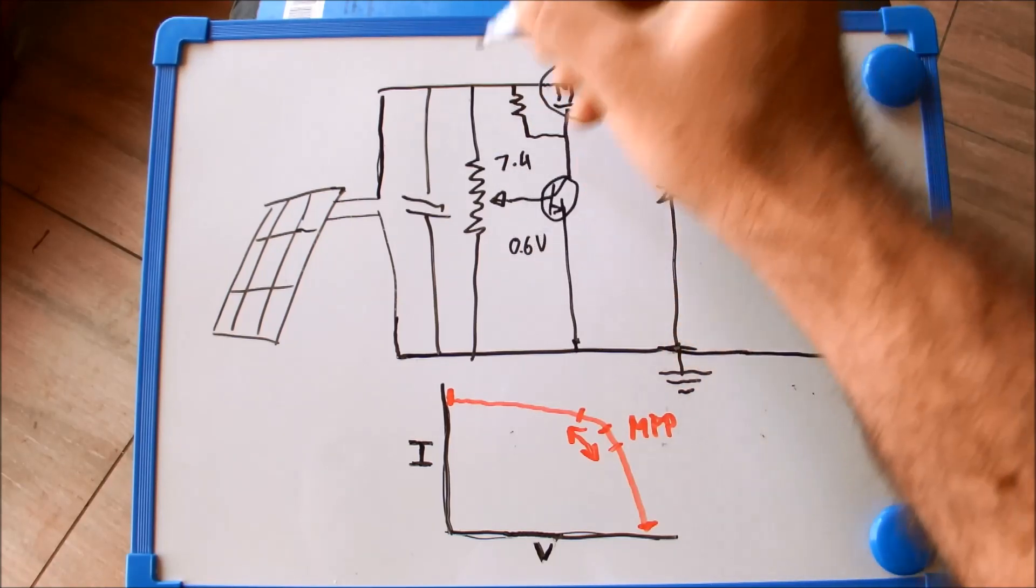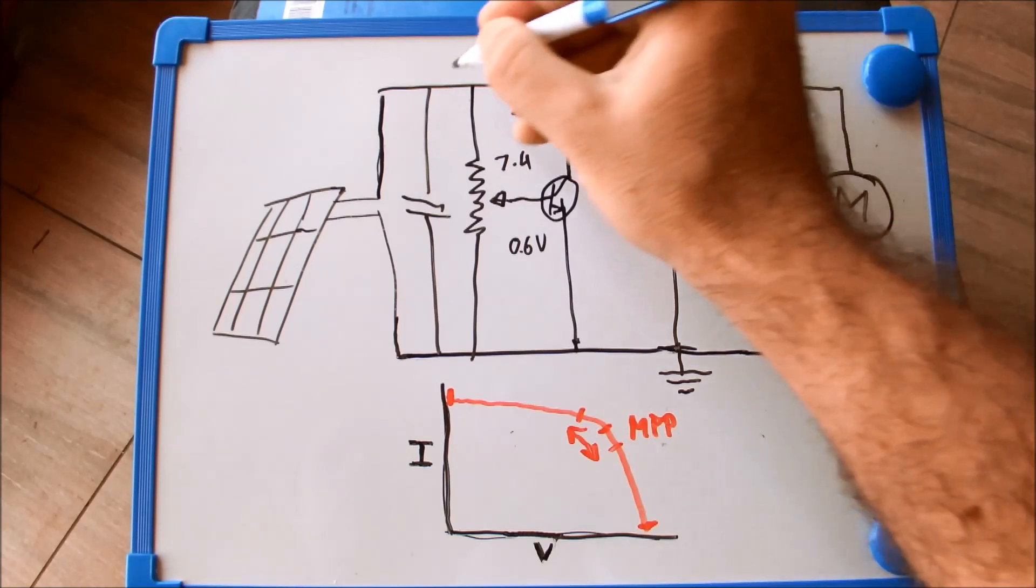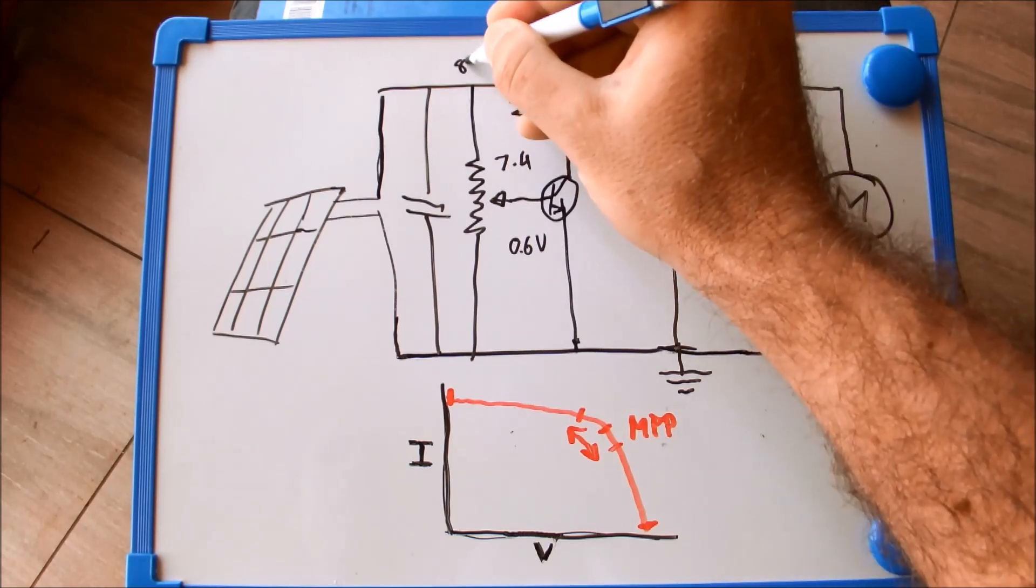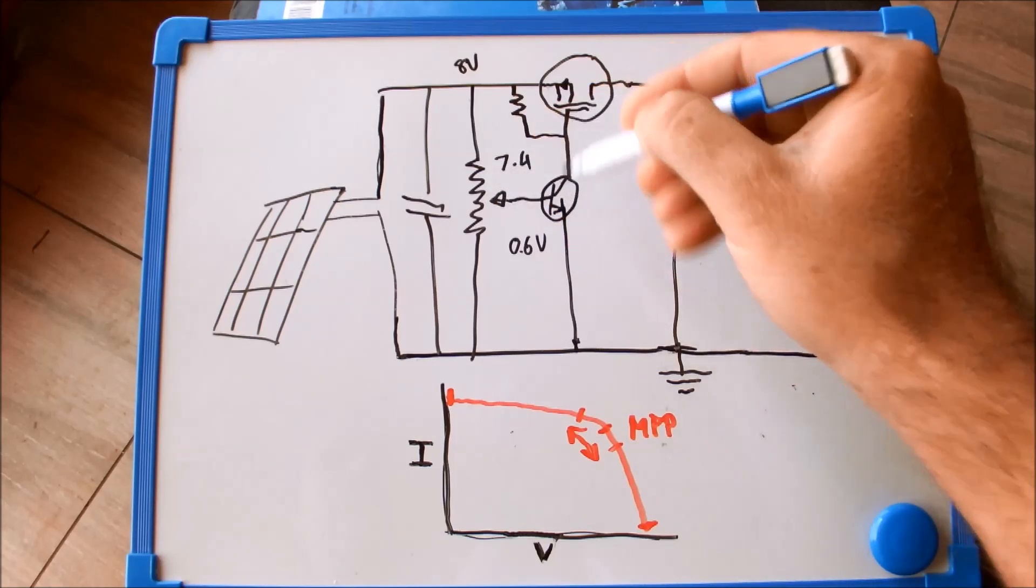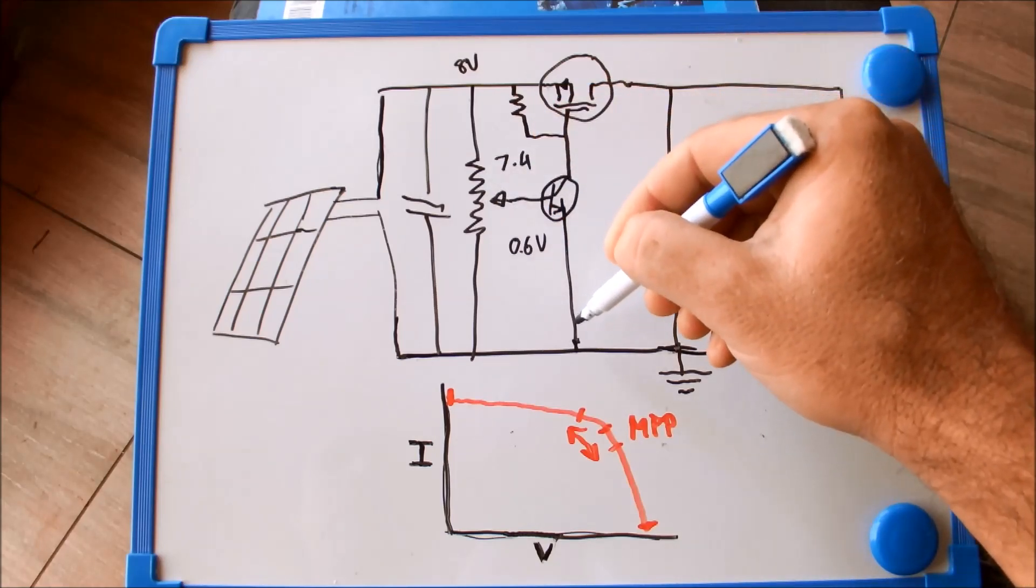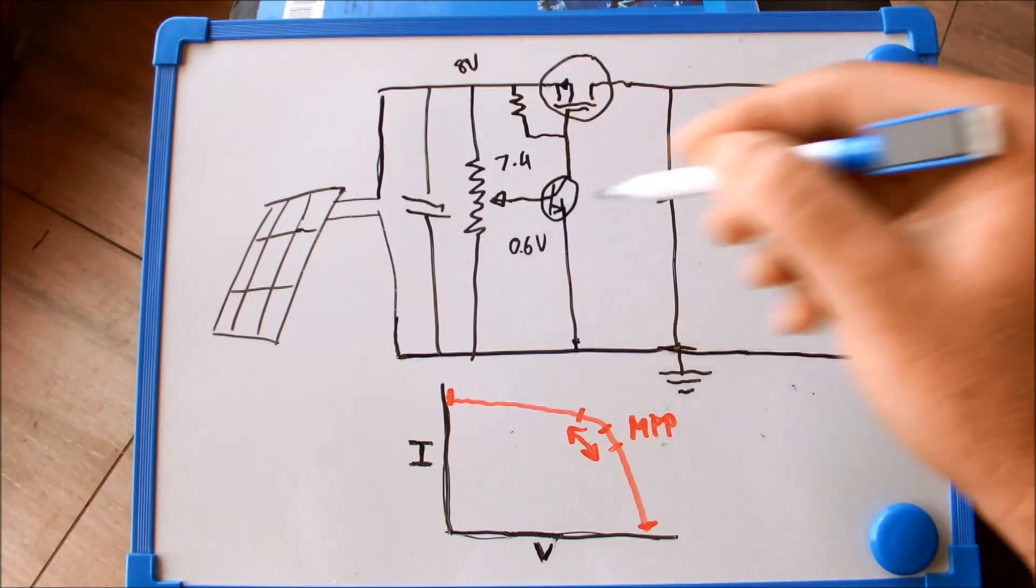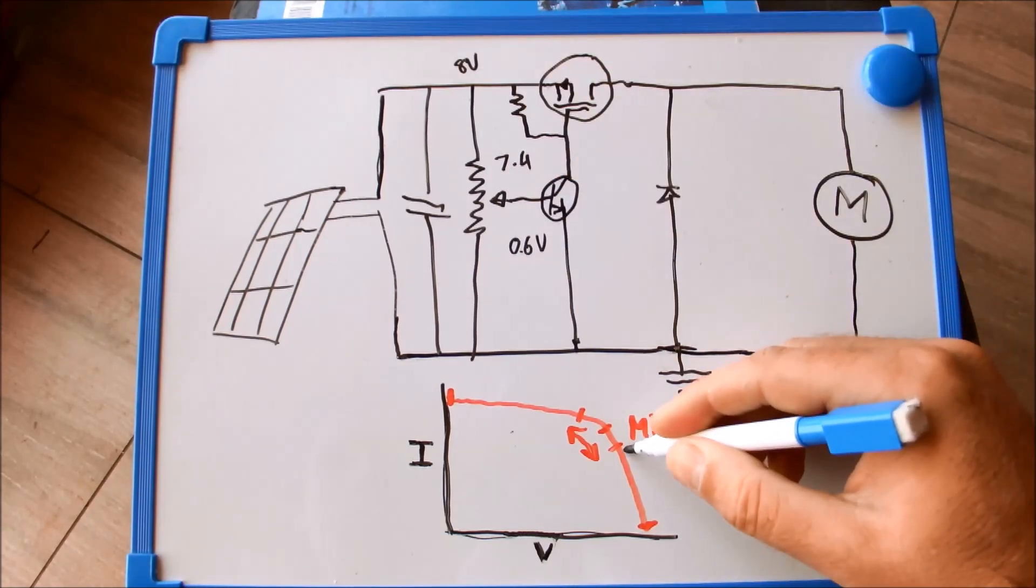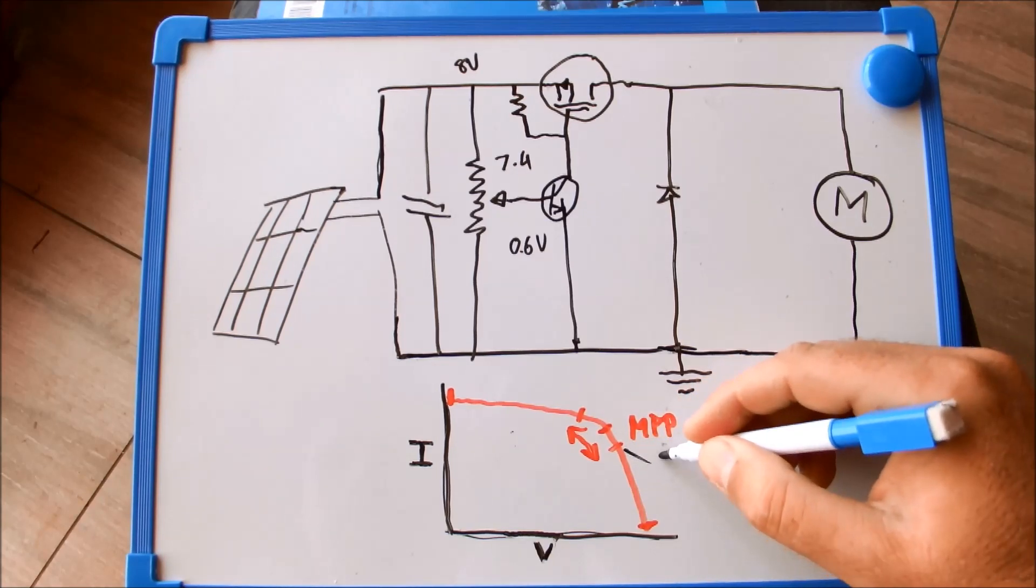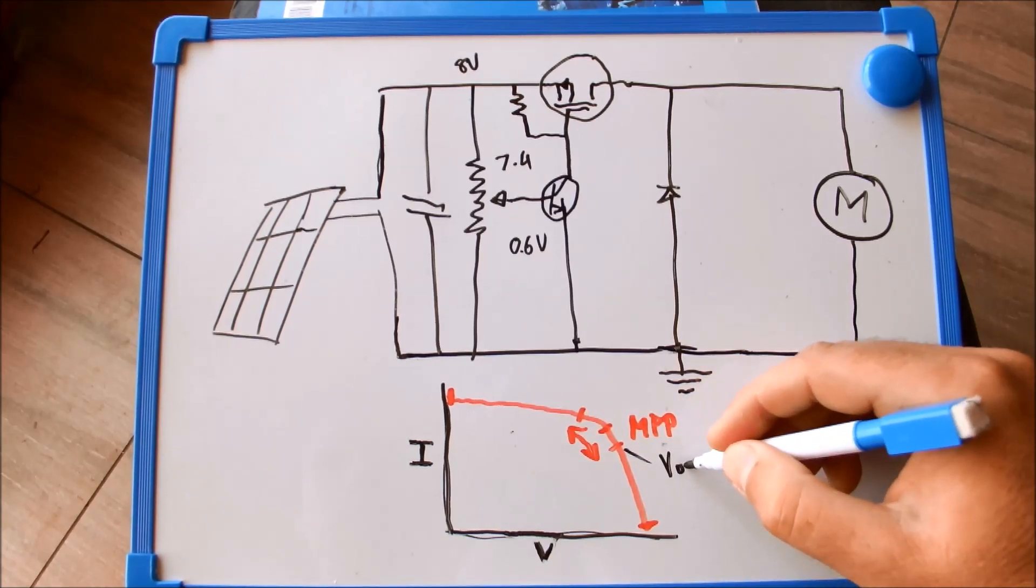That means the minute this top rail goes above 8 volts, the transistor will conduct, it will pull the gate of the MOSFET to ground and my circuit will be switched on. That 8 volts would be this point over here, let's call that V on.